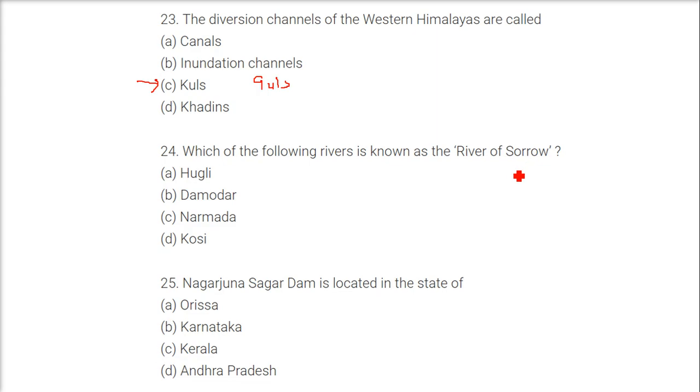Which of the following rivers is known as the River of Sorrow? The answer is the Damodar River.